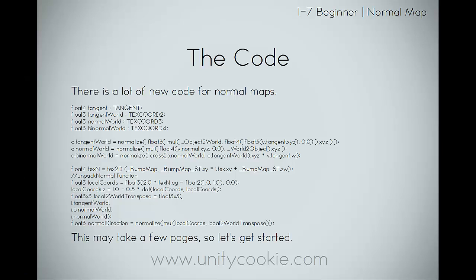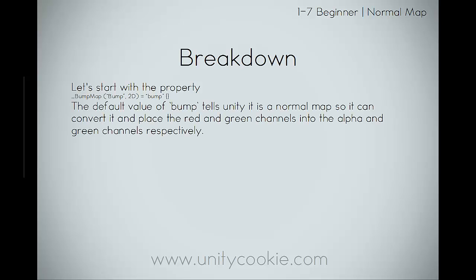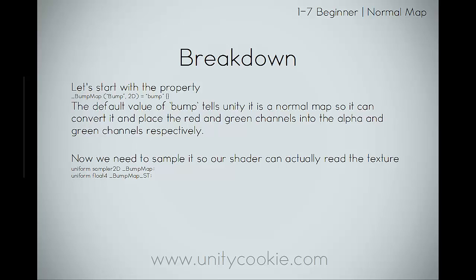Let's start with the simplest — the property. Bump map, bump, 2D. This is just like our texture map from part 6, except instead of white, we're using the default value of 'bump'. The default value of bump tells Unity it is a normal map, so it can convert it and place the red and green channels into the alpha and green channels respectively. We then need to sample it so the shader can actually read the texture — this is exactly the same as with our texture map. Remember, the underscore ST is there so we can get the texture offset and scaling in our shader.